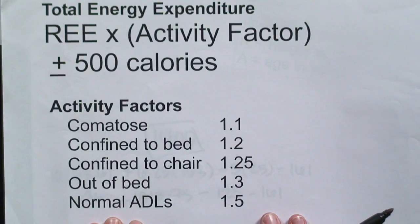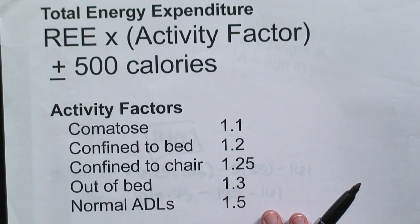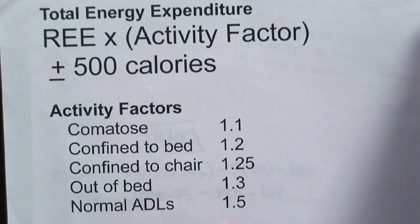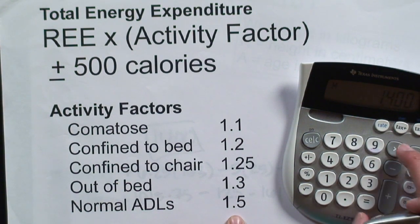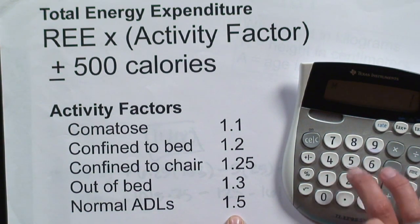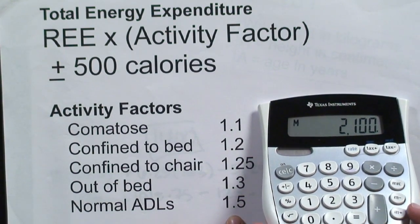Now I am physically active, so on top of this we can incorporate a certain physical activity level. There are different ranges depending on how active you are. Comatose is absolutely nothing, but even that has some small activity factor. I'm going to use 1400 calories, rounded up, and multiply it by my normal ADLs factor of 1.5, which gives me about 2100 calories. This is what my body has been utilizing on a day-to-day basis with average daily living needs — your ADLs.